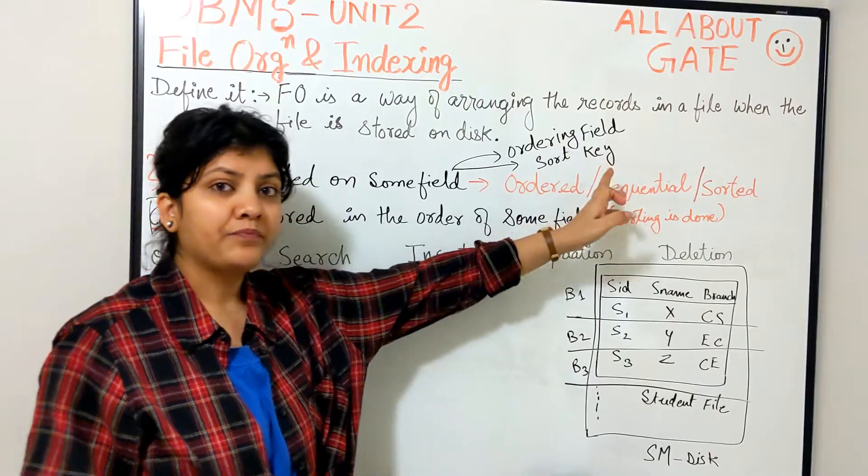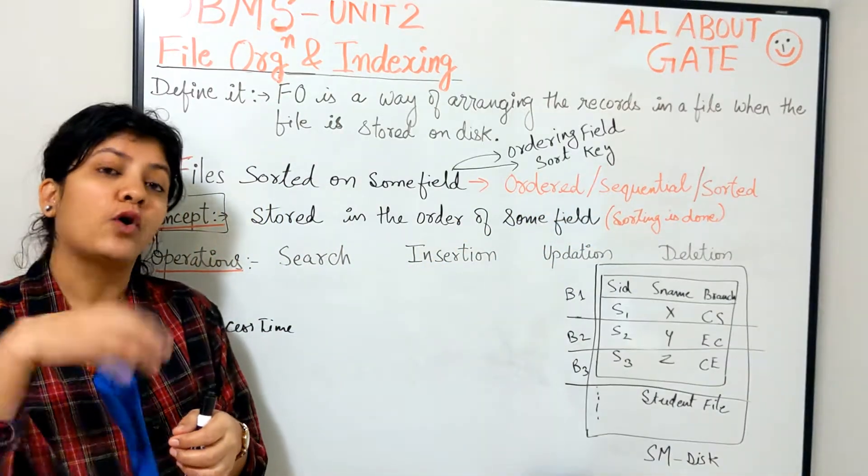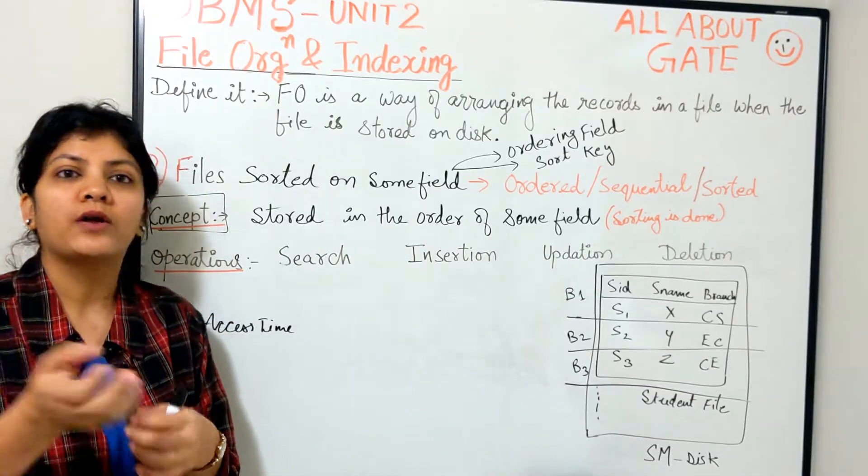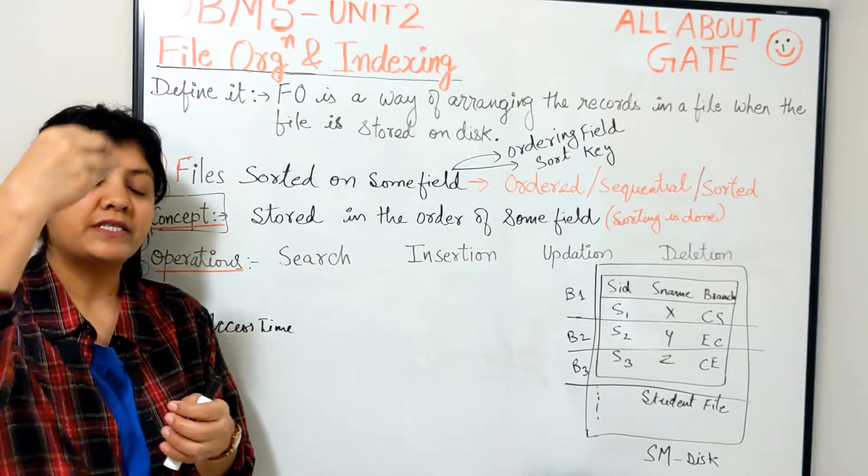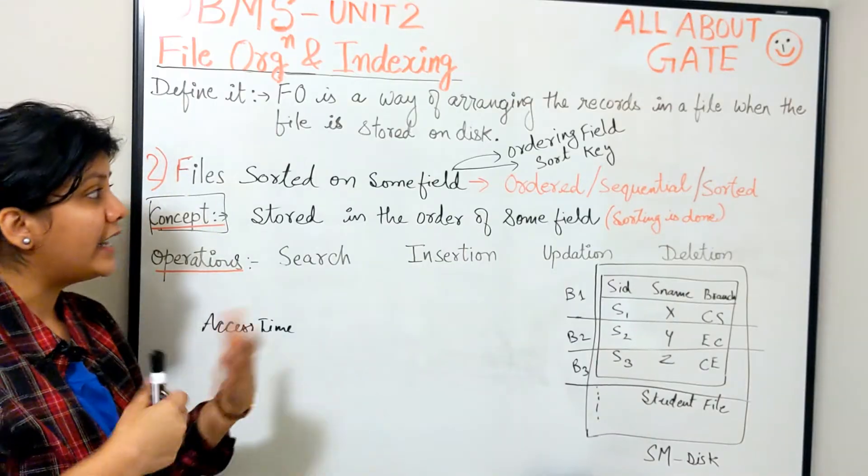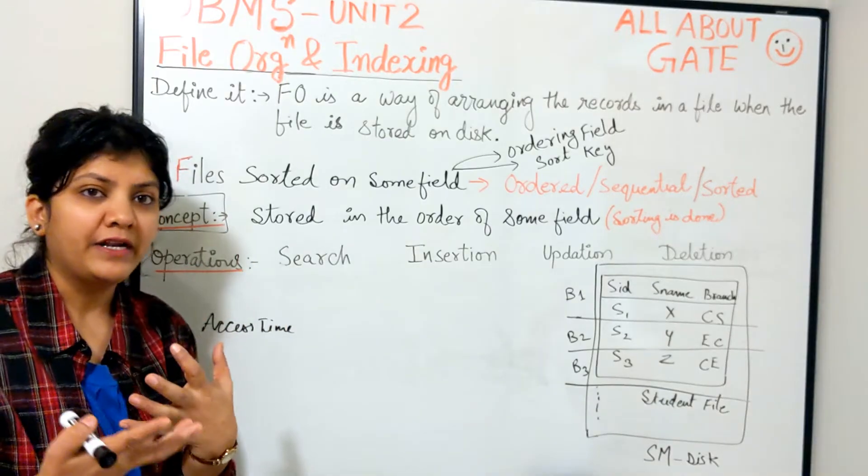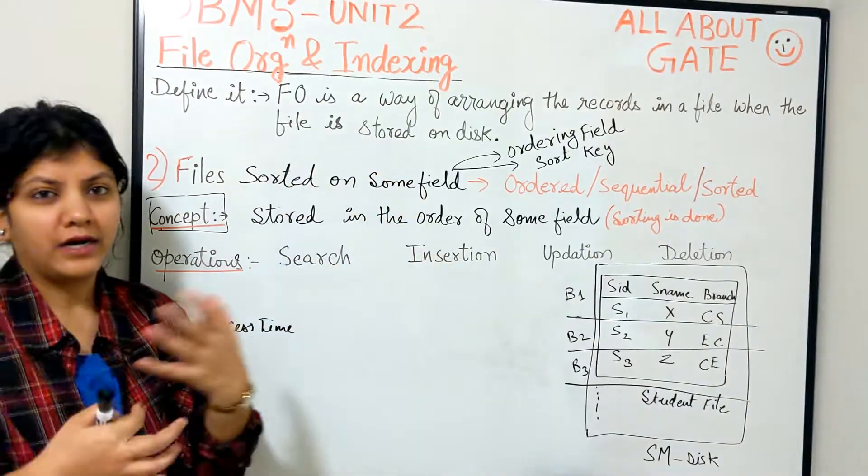Suppose the ordering field that you have chosen is already a key of the file—primary key or some candidate key of the file. That means it is unique in each and every record of the file. In that case, the ordering field is known as ordering key field.